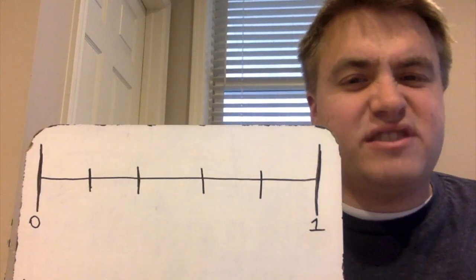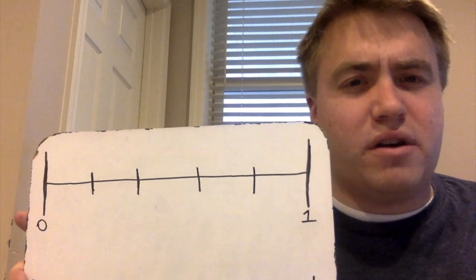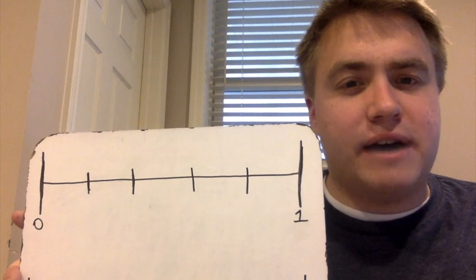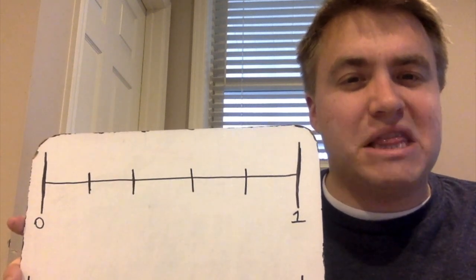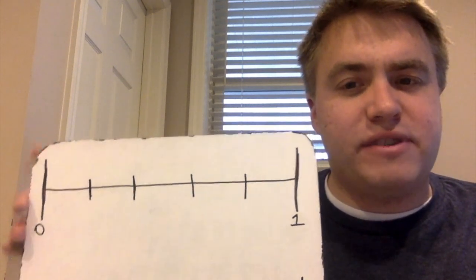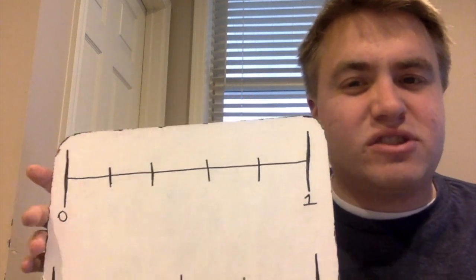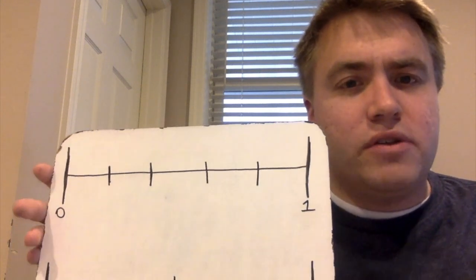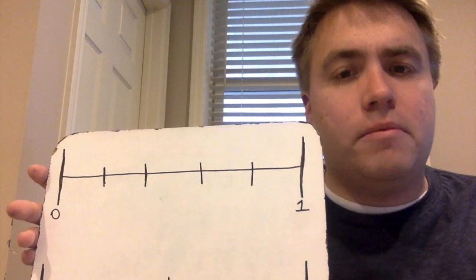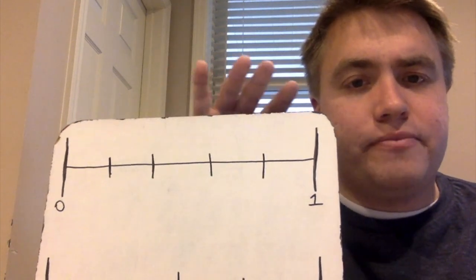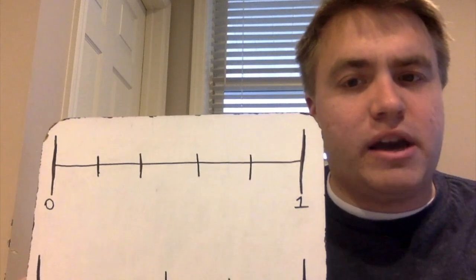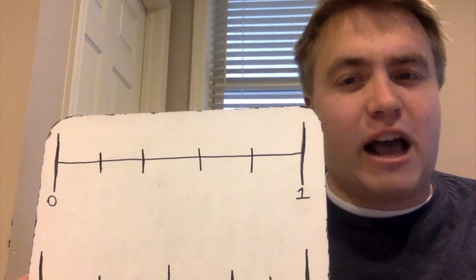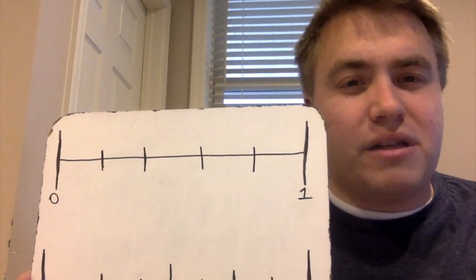Now I'm going to show you this number line. Notice it goes from zero to one, just like some of our other number lines, but this time I don't have any labels on it. We're going to figure out how we can label a number line. If I start at zero and go to one, I need to figure out how many equal parts there are between zero and one, broken up by my dash marks. I'm going to pause the video — I want you guys to try to figure out how many equal parts there are on my top number line.